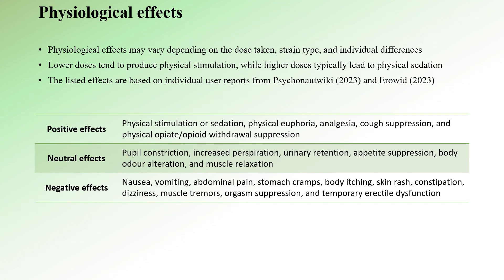The physiological effects of Kratom also vary depending on dosage. Lower doses tend to produce physical stimulation associated with a sympathetic reaction, inducing increased heart rate and blood pressure. Higher doses typically result in physical sedation, characterized by decreased cardiac output and potential muscle relaxation. The positive physiological effects may include physical stimulation or sedation, physical euphoria characterized by muscle relaxation and a warm bodily feeling, analgesia, cough suppression, and physical opiate and opioid withdrawal suppression.